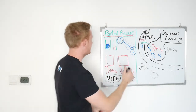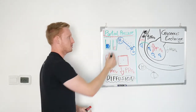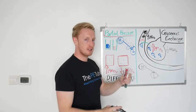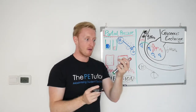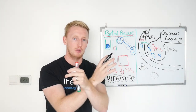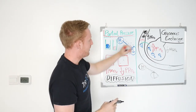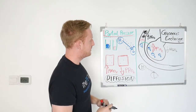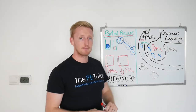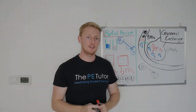It all comes down to partial pressures. If we didn't have these differences — areas of high pressure and low pressure — no exchange would happen. And that is gaseous exchange at the alveoli. I hope that was helpful and I hope to see you again soon.